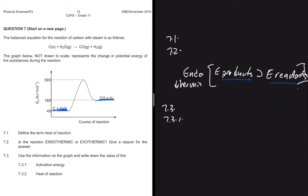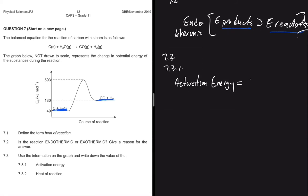7.3.1 says let's use the information on the graph and write down the value of that. And then the first question, we're looking for the activation energy. This is how we determine the activation energy. You say that the energy at the transition state, the energy at the transition state minus the energy of the reactants. That's how you get the activation energy.